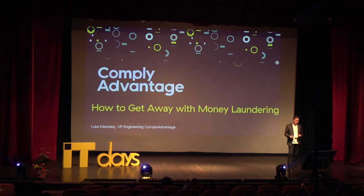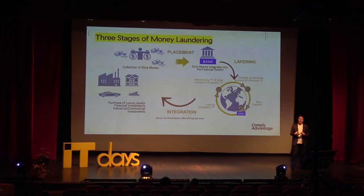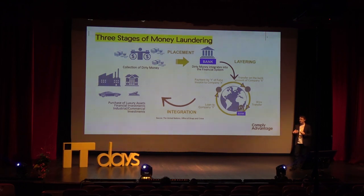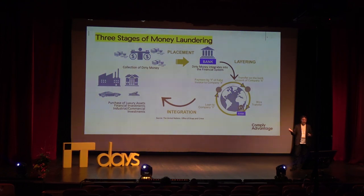Money laundering 101: what is it and how does it work? The purpose of money laundering is exactly what it sounds like — it's designed to turn dirty money into clean money. If you've made money from the proceeds of crime, you want to disconnect what you do with that money from the original crime. If you receive a bribe and use that money to immediately buy a car, it's very easy for a regulator or financial institution to track that — you'd lose the car. That's not what we want.